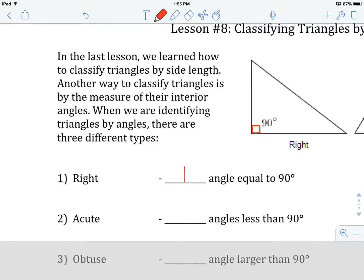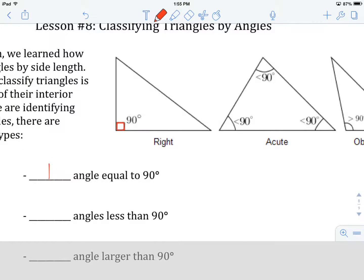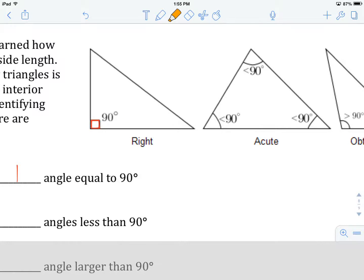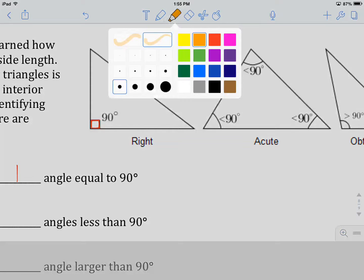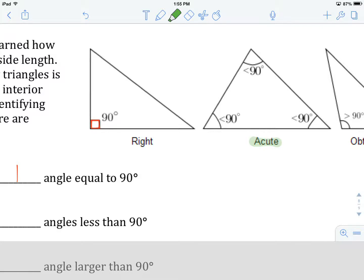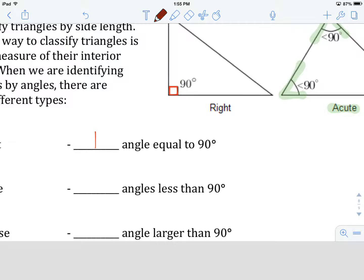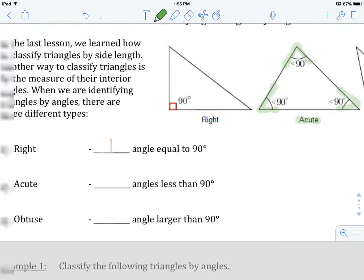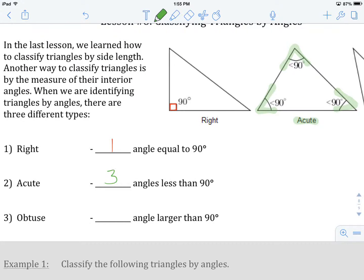The other two types of triangles are going to either have all of their angles less than 90, or one angle that's bigger than 90. Here we have what they call an acute triangle. Acute triangles have all three of their angles less than 90 degrees, each one individually.